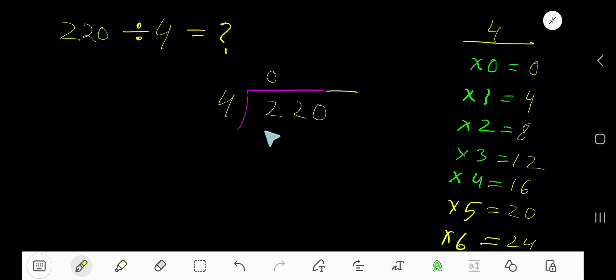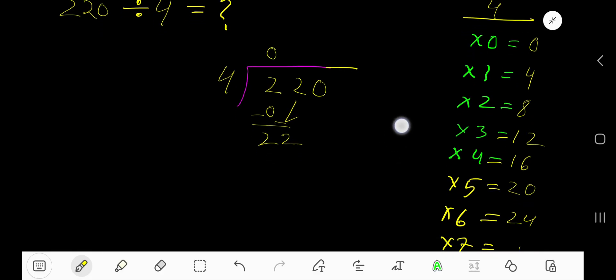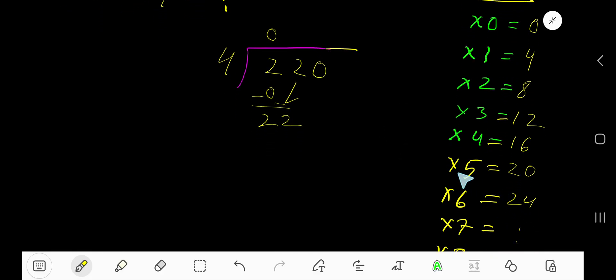So 0 times 4 is 0, subtract 2. Bring down the next digit; now you have 22. 4 goes into 22 how many times? 5 times, right. 5 times 4 is 20.